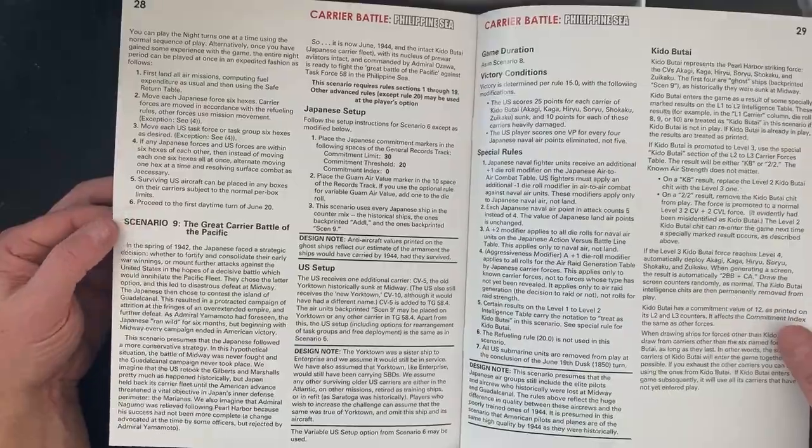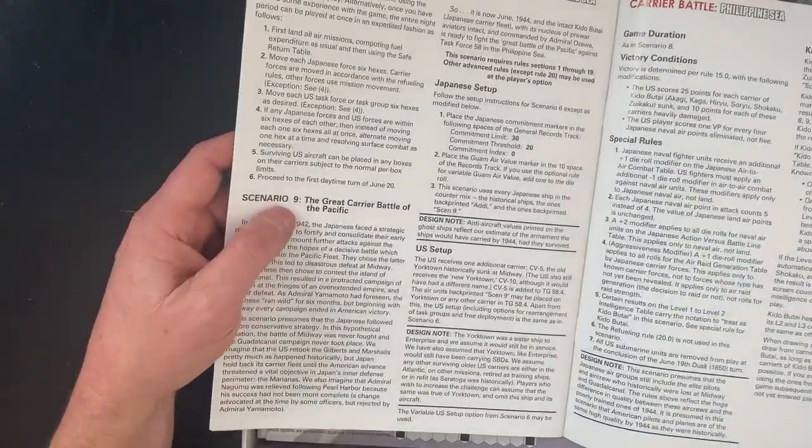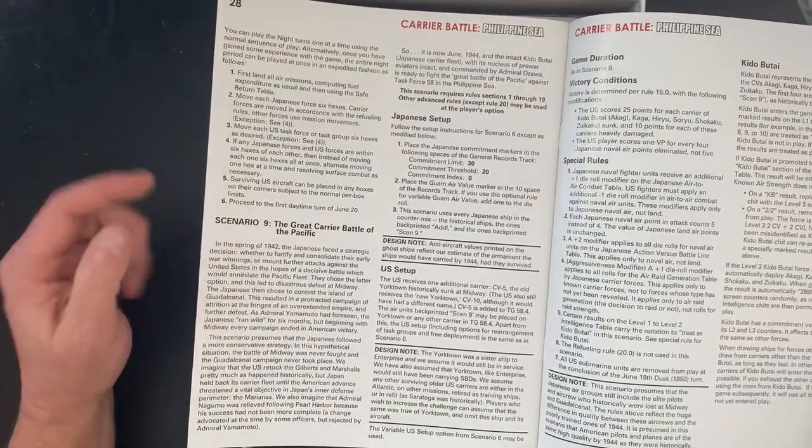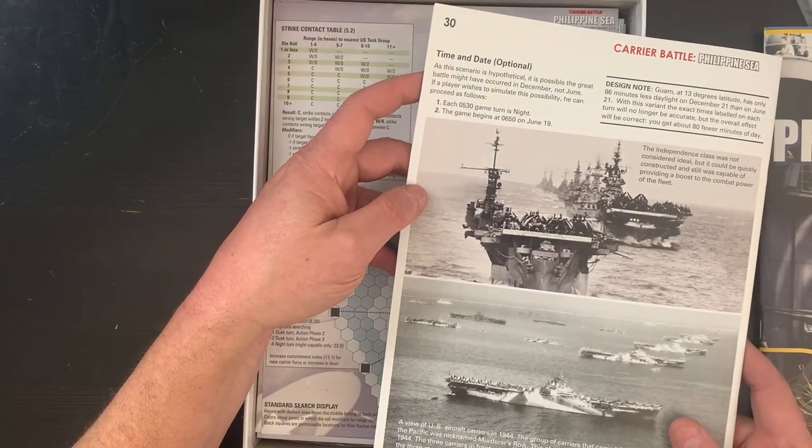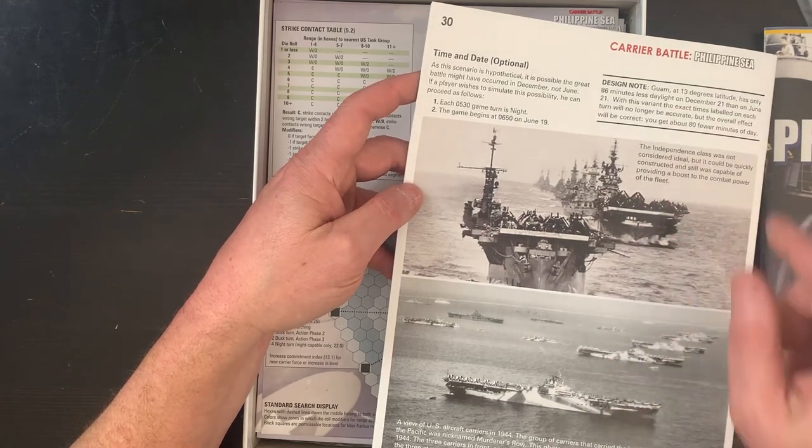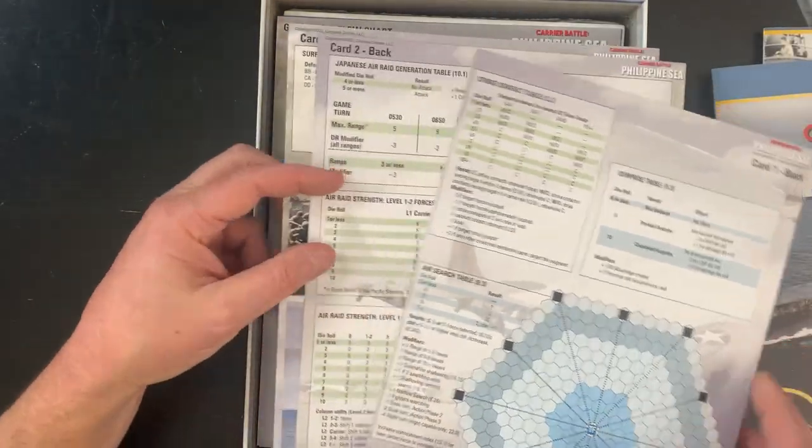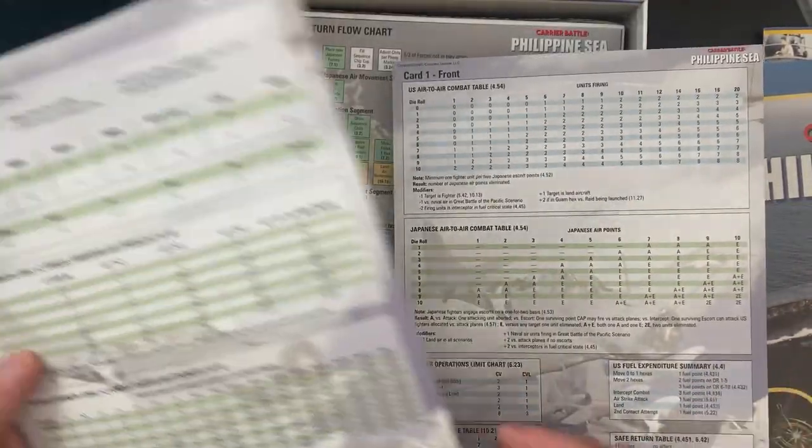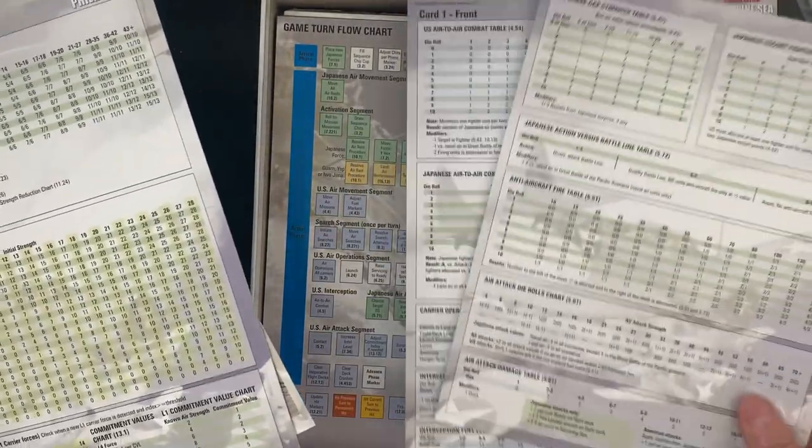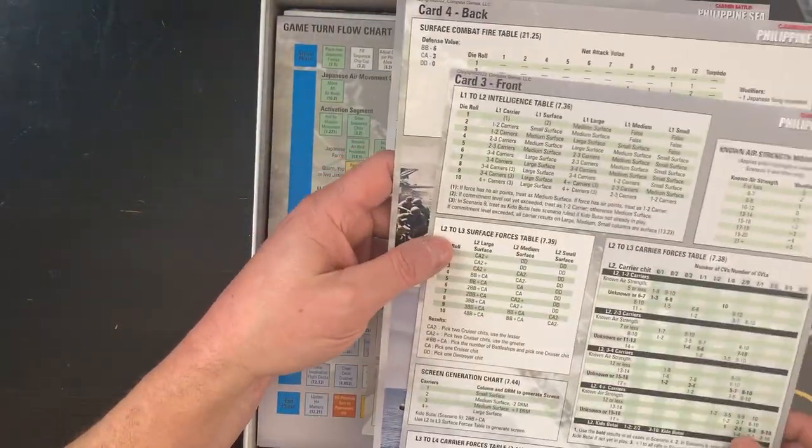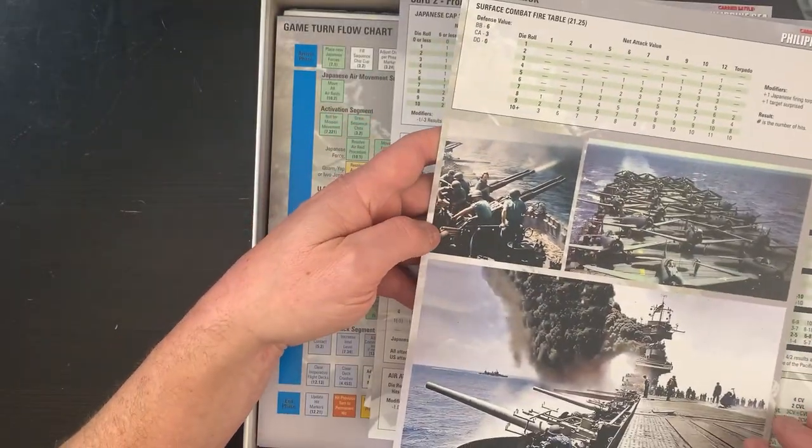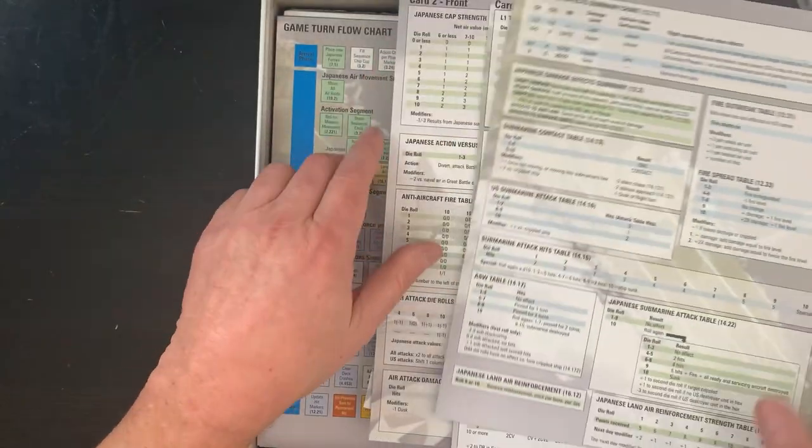And then scenario nine: The Great Carrier Battle of the Pacific. This is the hypothetical one. Nice. More time, optional. Sweet, talks about some designer notes there. What else do we got in here? Card one back, card one front, card two. These are all in the back. Obviously here's a nice back. Great color photos. That kind of gets you into the mood.